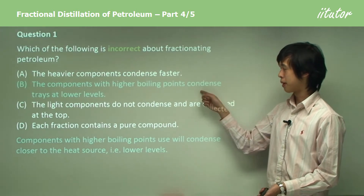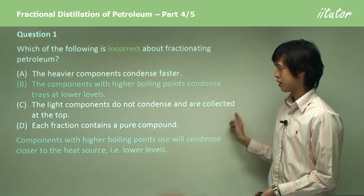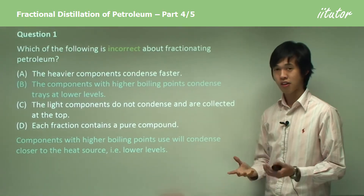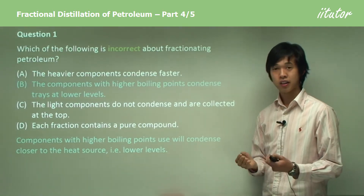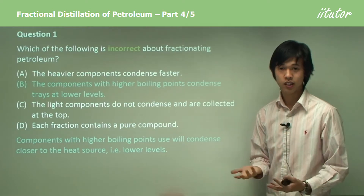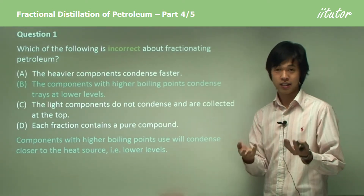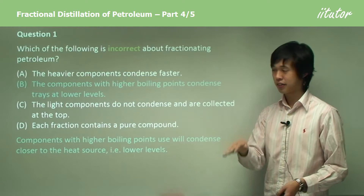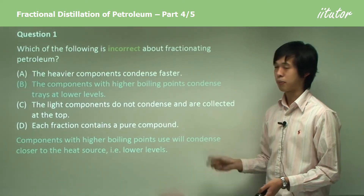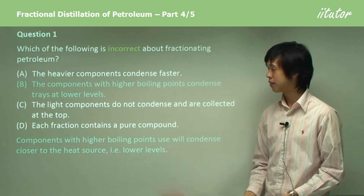Option B: the components with higher boiling points condense at trays at lower levels. Remembering that they take more energy to turn into gas, they will condense much closer to the heat source — at lower levels. This is true about petroleum, so it's not the correct answer for this question.